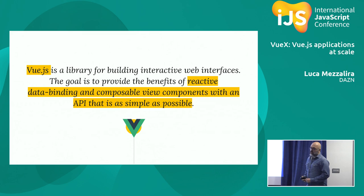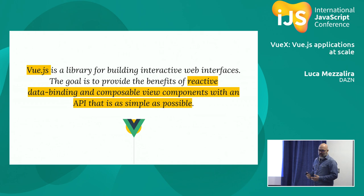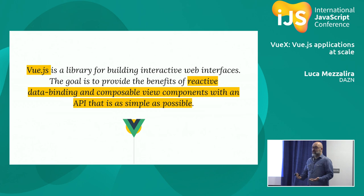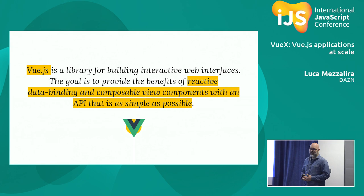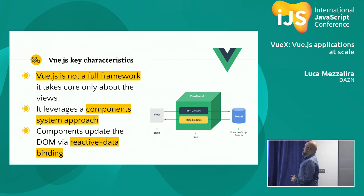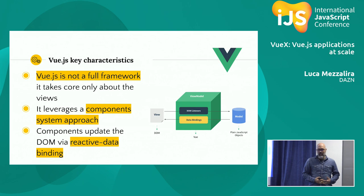Vue.js — this is the classic thing you can find on the Vue.js website. It's a library for building interactive web interfaces. The goal is to provide benefits like reactive data binding and composable view components with a simple API. Often when I read these kinds of things I start to dig in, because it's very commercial and I want to understand what's behind the scenes. So I started to dig a little bit inside that to understand Vue.js.